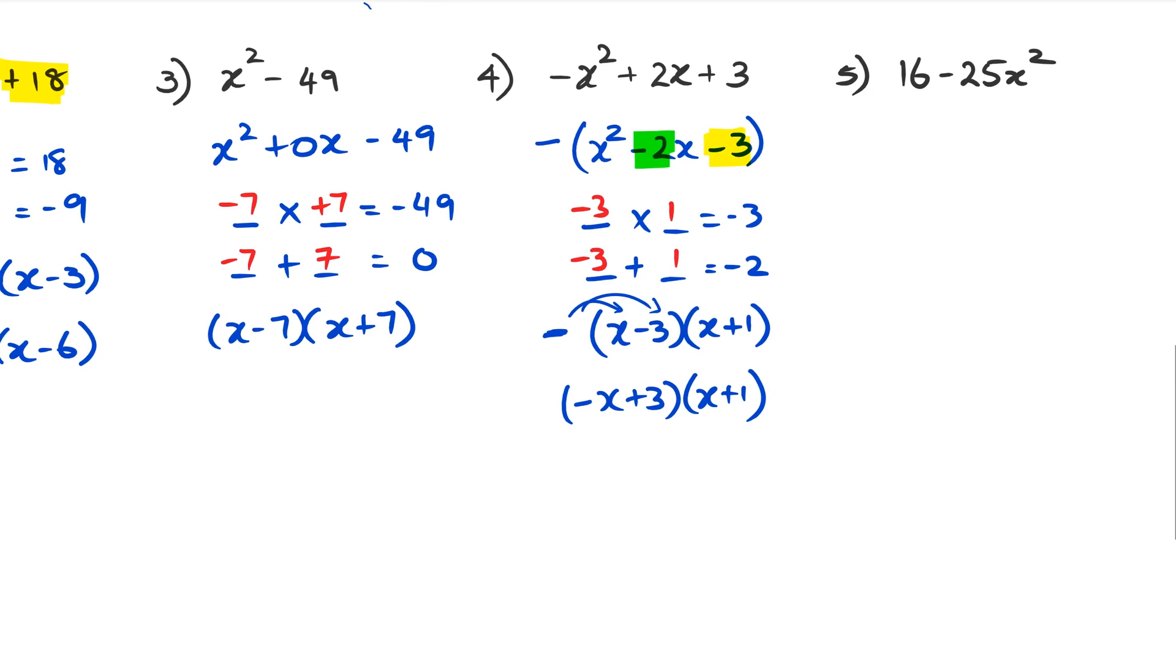We get to our last question, question 5. As you can see, question 5 is very similar to question 3 because what you have is a bunch of squared numbers. You've got 16 which is 4 squared, you've got 25 which is 5 squared, and then you've got x² itself. Obviously with this one, you don't want to be trying to figure out taking out the negative 25.